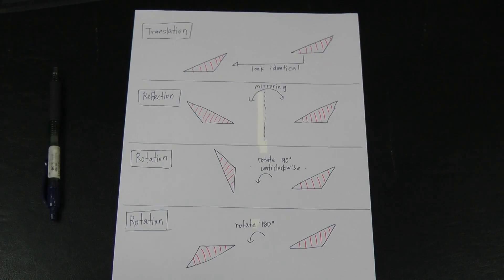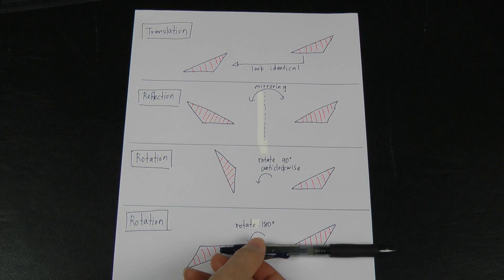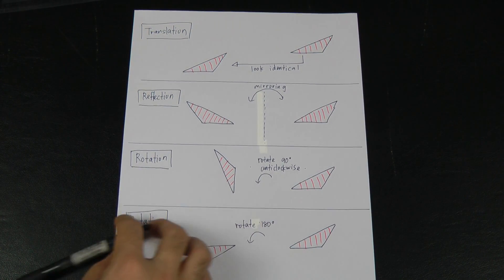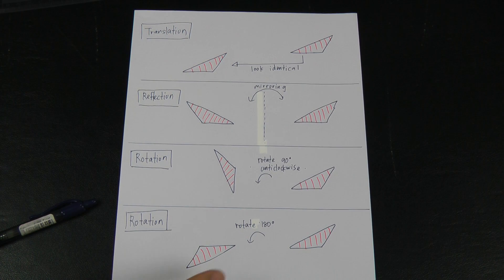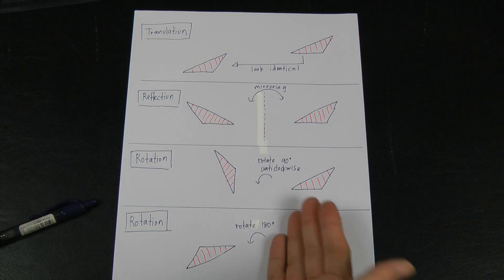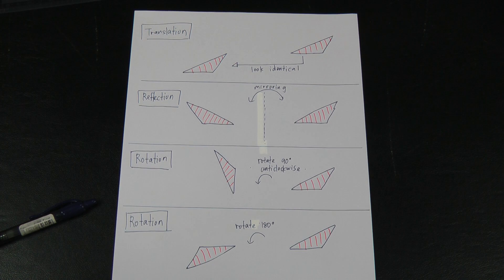For rotation 180 degrees, the horizontal line rotates 90 degrees and then 90 degrees again, so it becomes a horizontal line again. Rotation 180 degrees is different from reflection — if this were a mirror, when I flip the paper the triangle would be on top. Some students get confused between rotation 180 degrees and reflection, so pay attention to this difference.